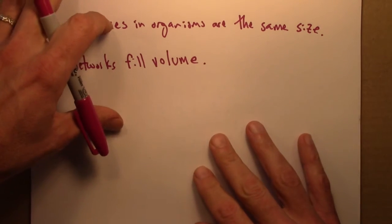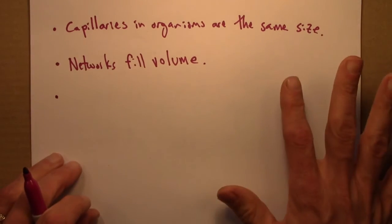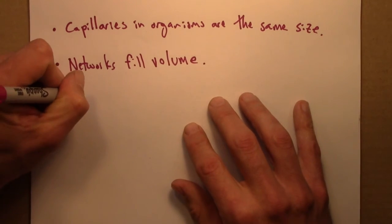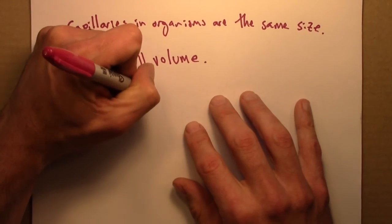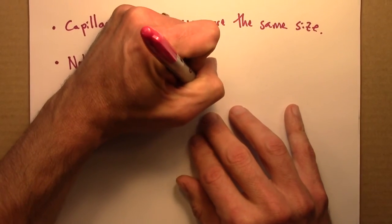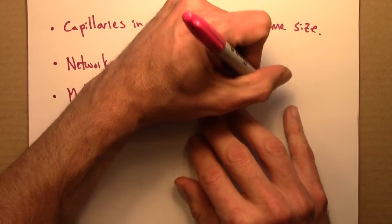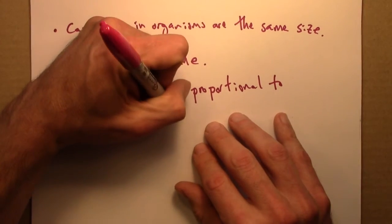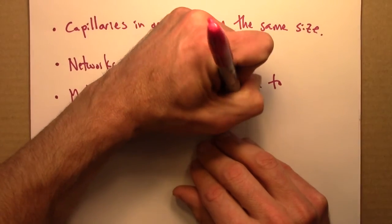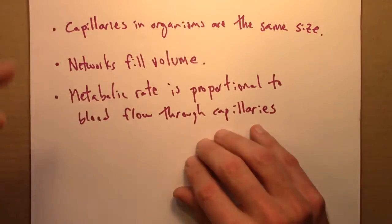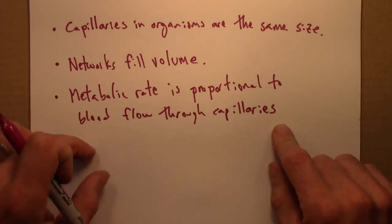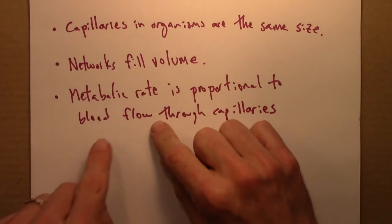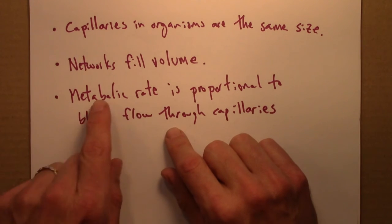The last piece of the argument then relates all of this to metabolic rate. And so it says that the metabolic rate is proportional to the rate of blood flow. So metabolic rate is proportional to the blood flow through the capillaries. This is another key piece of the argument that West Brown and Enquist use in their theory.